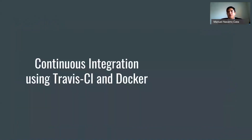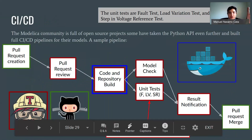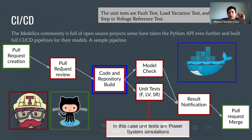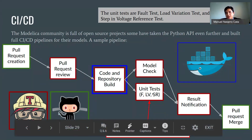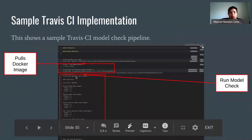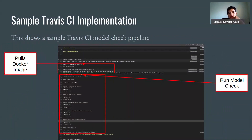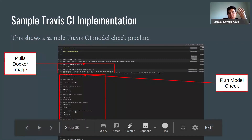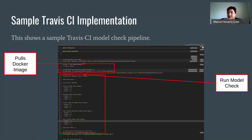This opens up a whole world of possibilities. For example, we can start looking into continuous integration using Travis CI and Docker, putting it in GitHub. With Travis CI, we boot it up, and through a Docker container, we review the pull request, build the code on the repository, and with these Python APIs, we create a model check script and unit tests — in this case, power system unit tests like fault tests. We then check the result, notify the user, and determine whether to merge a pull request. A sample CI implementation boots up Travis CI, pulls the Docker image from Docker Hub, runs a model check on exciters, machine models, turbine models, and power system stabilizer models, and tells you whether you can merge — which is very powerful as libraries and projects within Modelica develop.